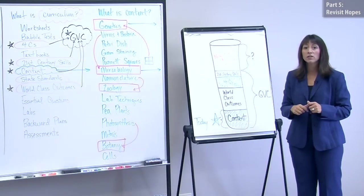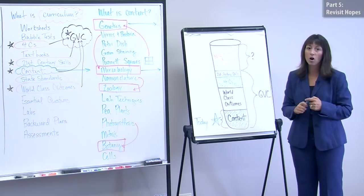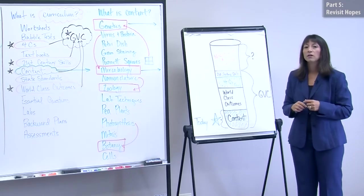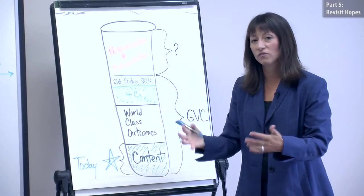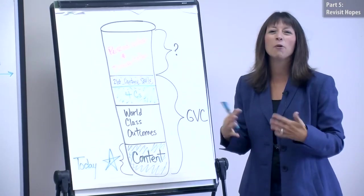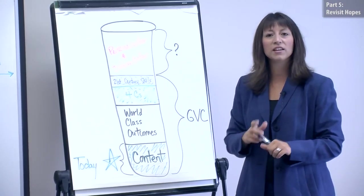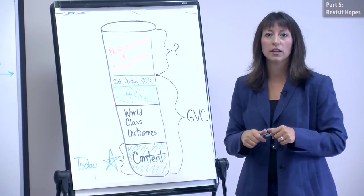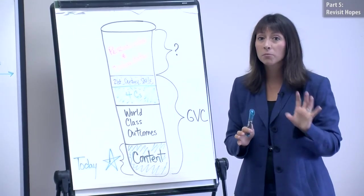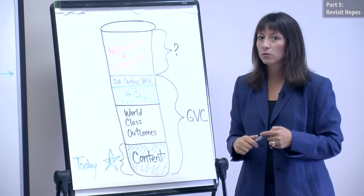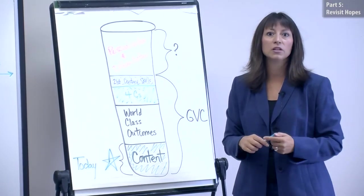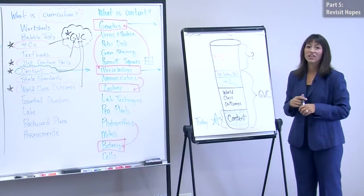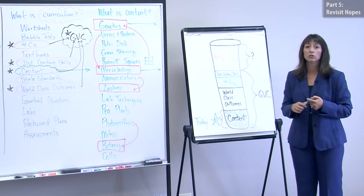Then finally we need to revisit the hopes that they started the course with and make sure that we've met all their needs. If there's something on the list that you haven't met then you need to ask them if they want you to do something more to help them with that. Or if they say no, that probably wasn't for this class anyway, go ahead and scratch it off the list. But that decision needs to be completely theirs. We really value collaborating with students in this district and adults are no different.